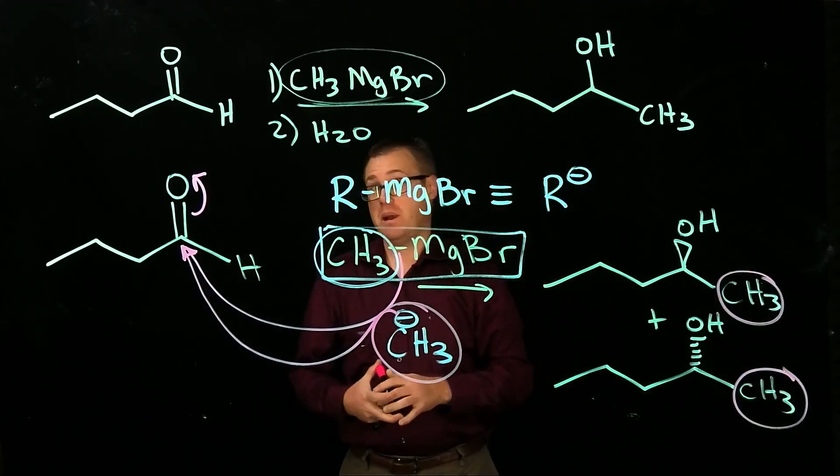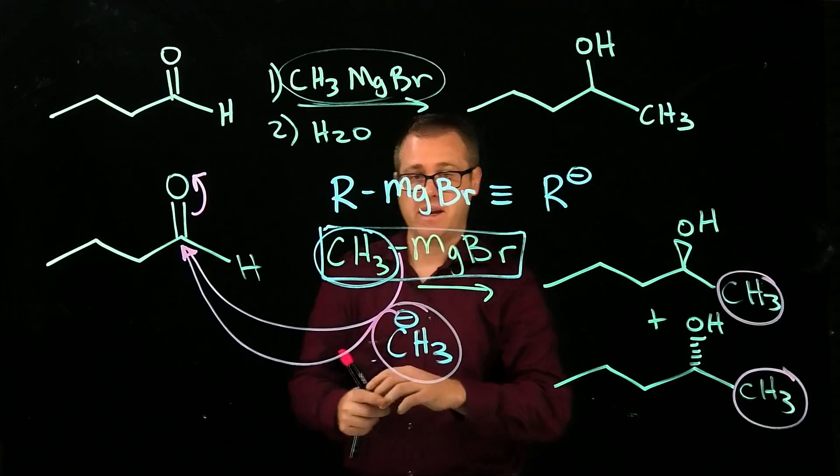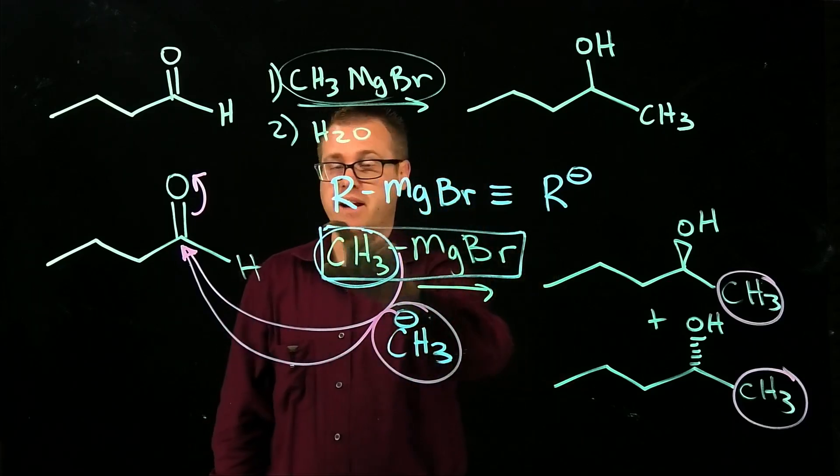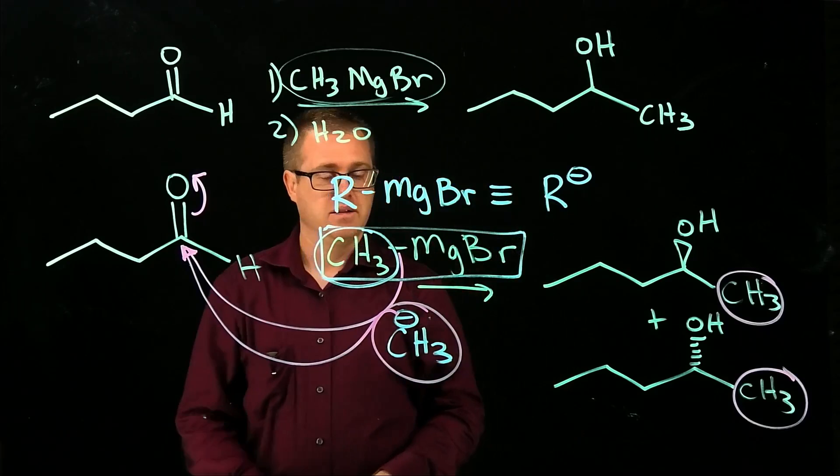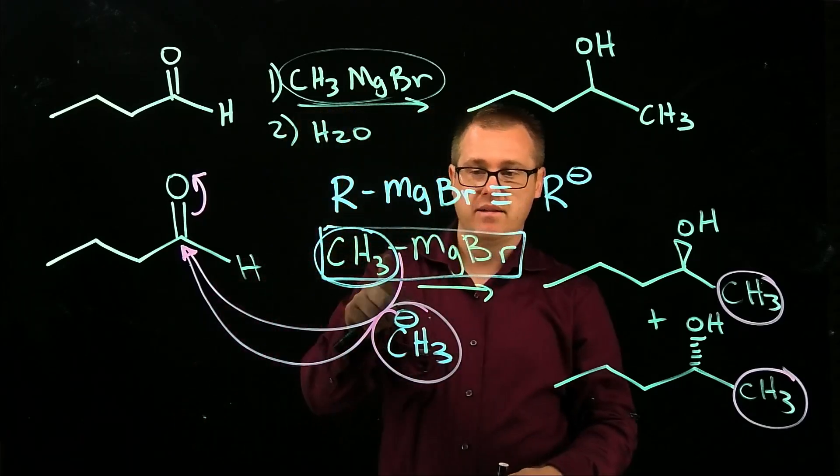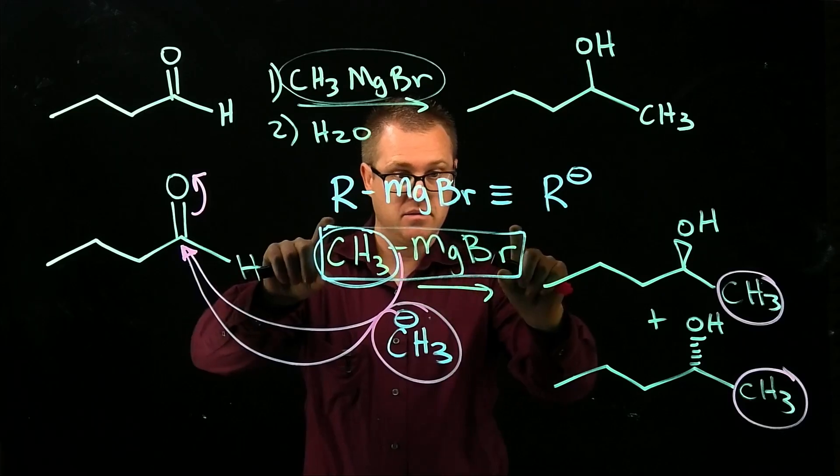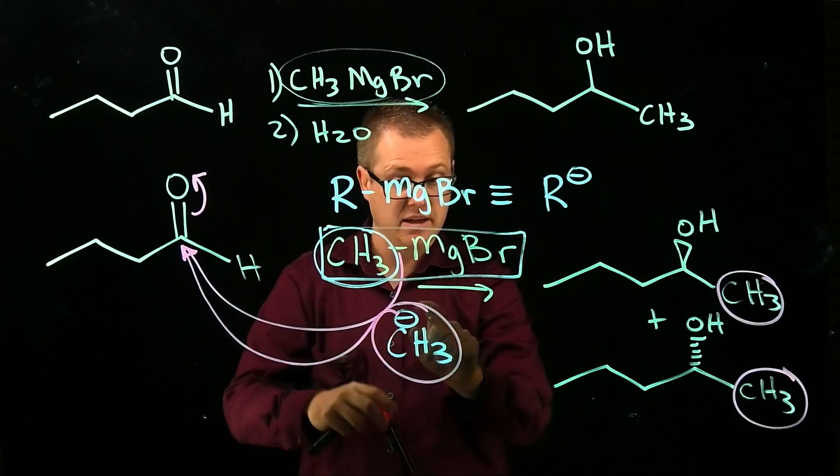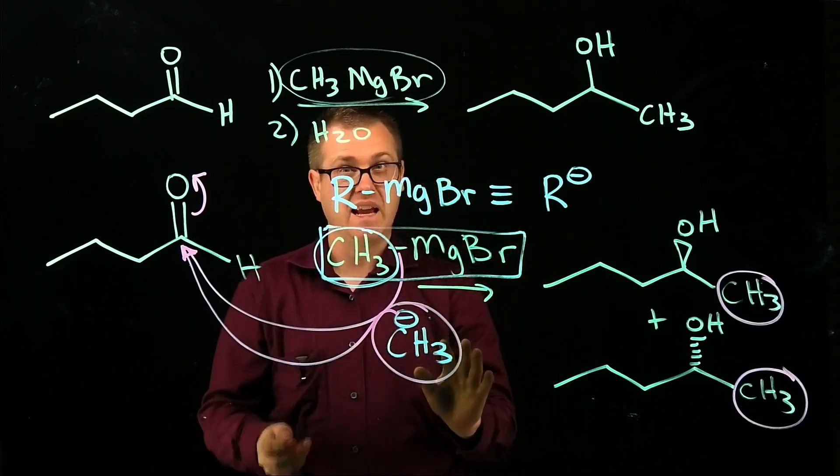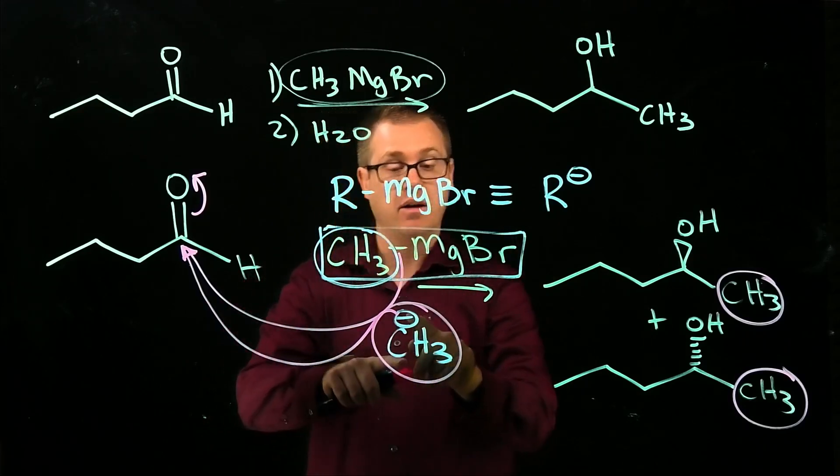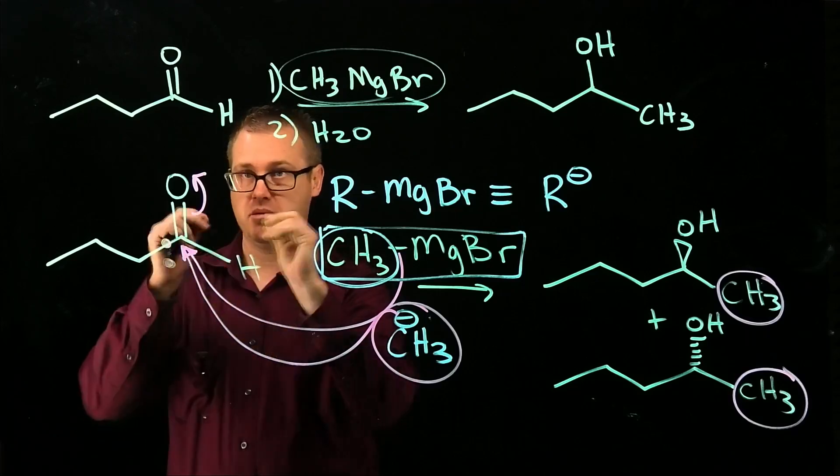Either way works for me. If you want to do the mechanism with the whole Grignard thing written out, that's fine. Or you could say this is equivalent to this. If you say that or write that down, then this coming and attacking, perfect.